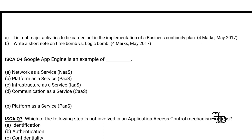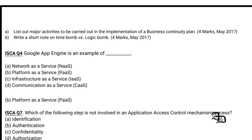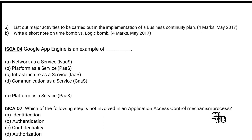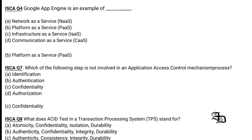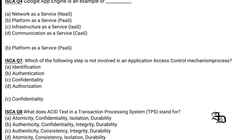Question 2: Which of the following is not a step involved in the application access control mechanism? The steps include identification, authentication, and authorization. Confidentiality is not a step involved in application access control, so option C is the correct answer.